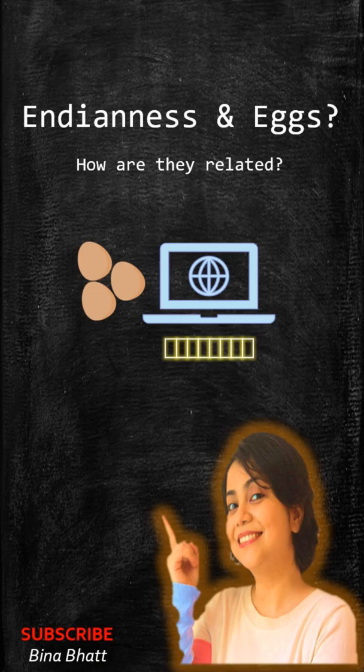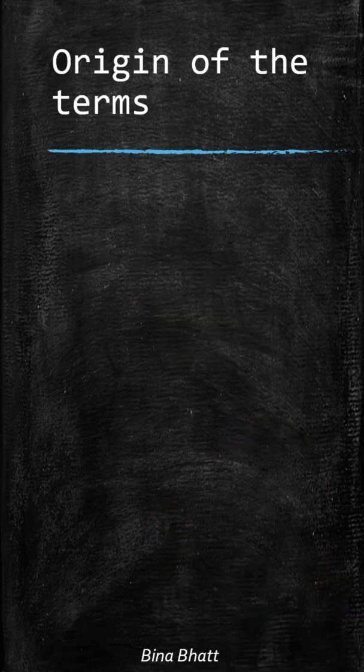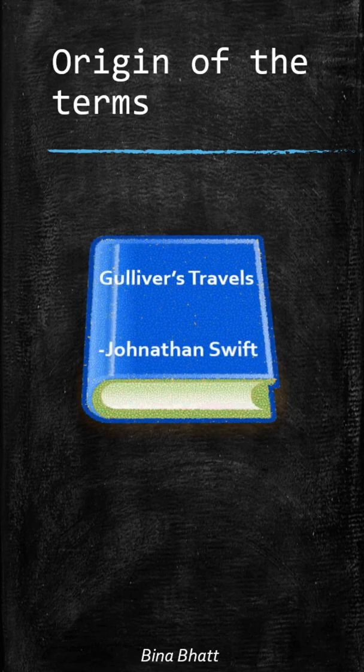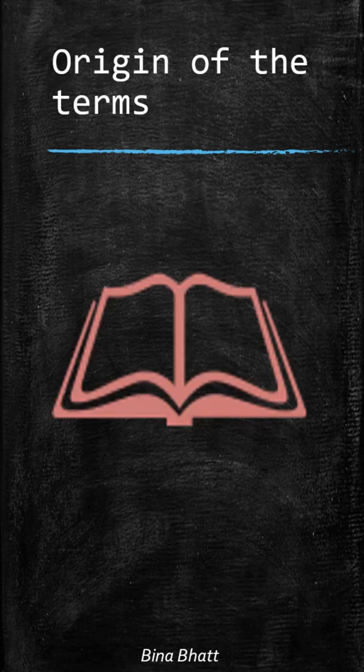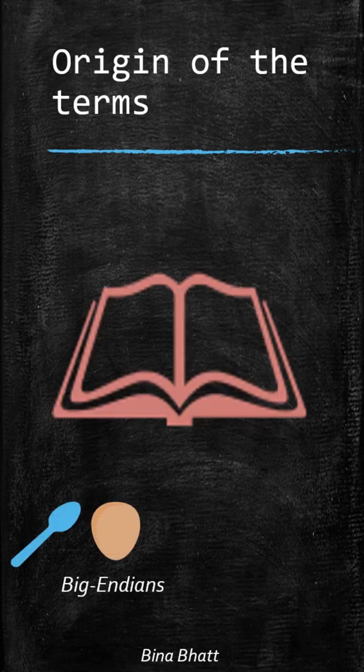Let's look at the origin of both these words — Little Endian and Big Endian. They were first used by Jonathan Swift in his novel Gulliver's Travels. Here, a political group that broke their boiled eggs at the Big End were known as Big Endians, and they rebelled against a Lilliputian king who made his subjects break their eggs at the Little End.